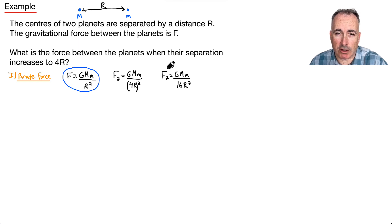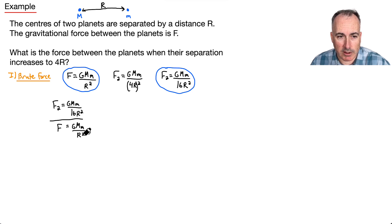That'll be my new equation, and then the way I solve all ratio questions like this: I do new over old. So that means I'll divide these. I'll say F2 equals—this is a bit long to write, it's annoying—GMM over 16r squared divided by GMM over r squared.